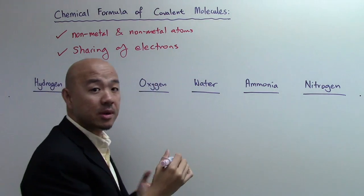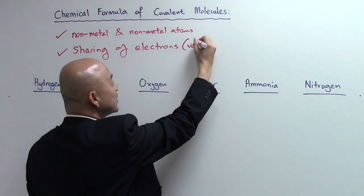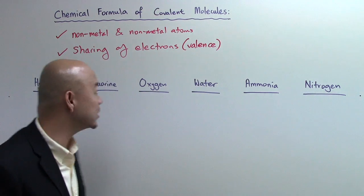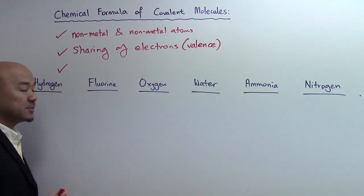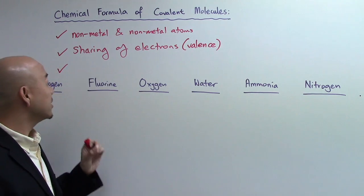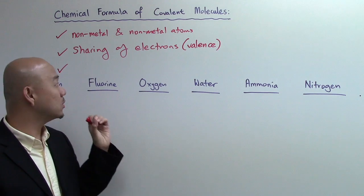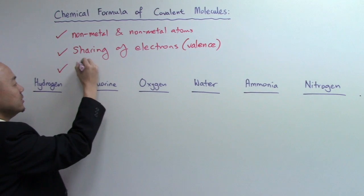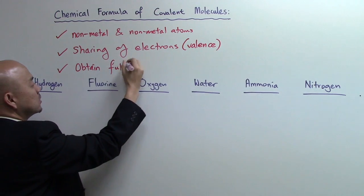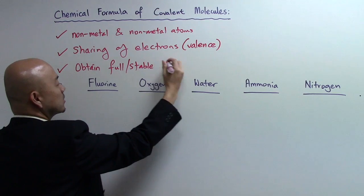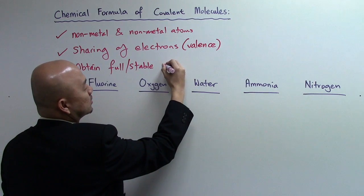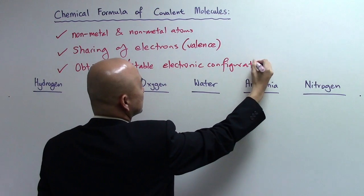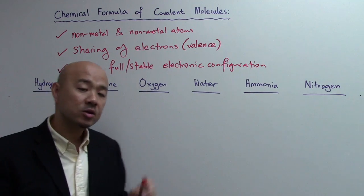When we talk about electrons, we are talking about the valence electrons — the outer shell or outermost shell electrons. The last point is that you need to understand why these nonmetallic elements want to share electrons. The aim is to obtain a full or stable electronic configuration, just like the noble gases.